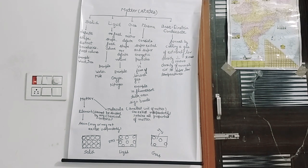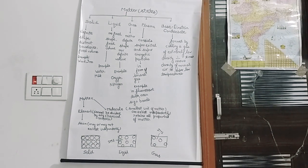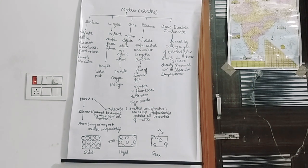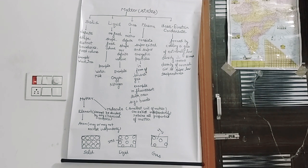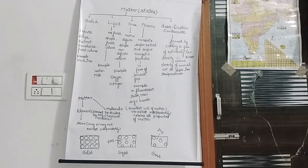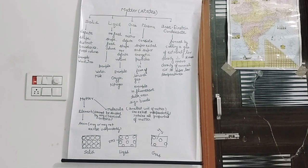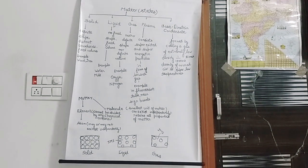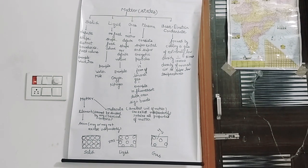Solids are that state of matter in which there is a definite shape, definite volume, and strong intermolecular forces of attraction. Liquids do not have a fixed shape — water takes the shape of whatever container you keep it in. The third category is gases: they are neither having a fixed shape nor a fixed volume, and the intermolecular forces of attraction are minimum.